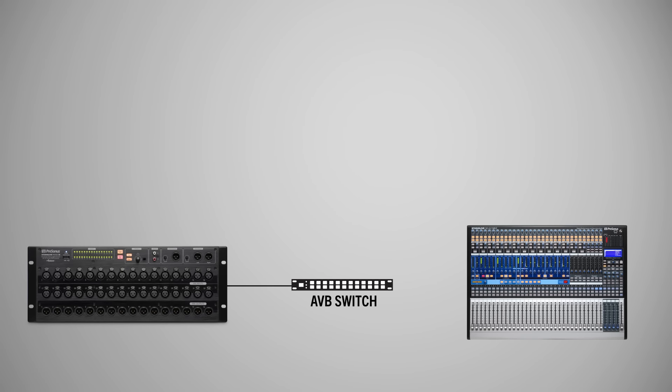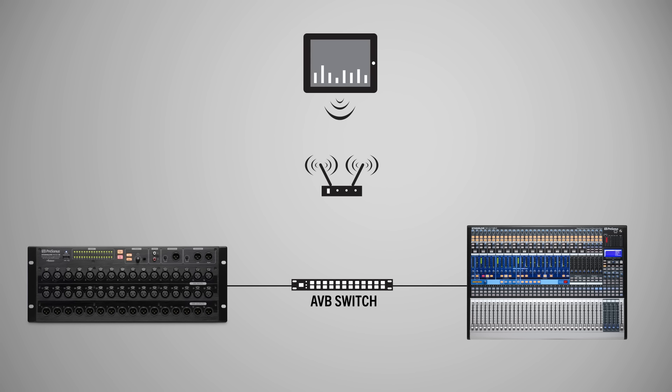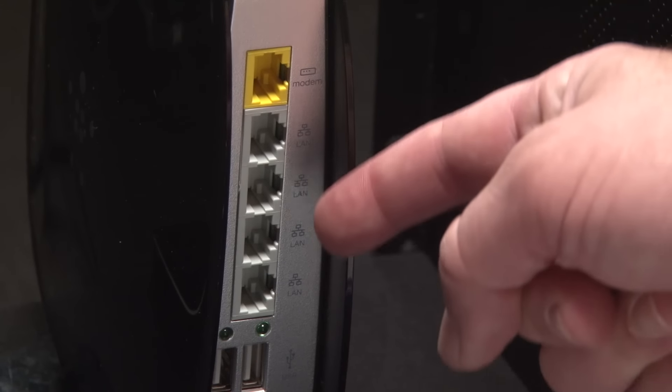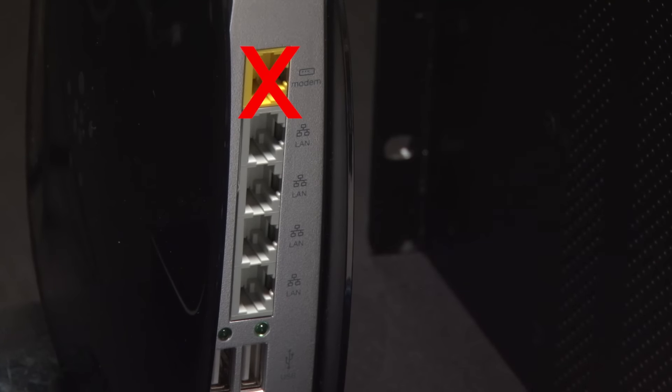When using an AVB switch and a router, you can leave the RM mixer and AI console mixer in the default dynamic IP address mode. With this configuration, connect both mixers to the AVB switch. Also connect the router to the AVB switch using one of the router's local area network or LAN ports, not the wide area network or WAN internet port. Any wired control devices, such as a computer, can be connected to either the AVB switch or the router LAN ports. Wireless control devices will connect to the router's wireless access point.